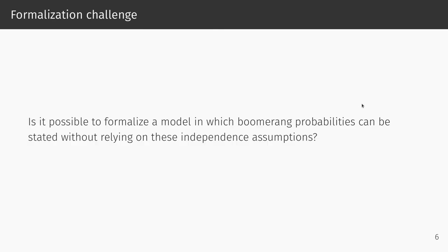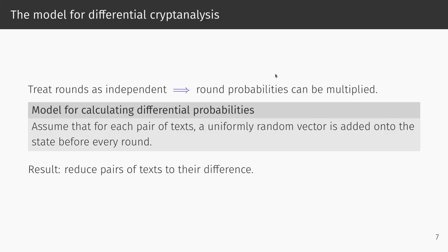This leads us to the main question in our research: can we formalize a model in which we can state boomerang probabilities without relying on these independence assumptions? As a starting point, we looked at the standard model used to calculate differential probabilities. To calculate probabilities of differential characteristics or trails efficiently, we want to treat rounds as independent, thereby allowing us to determine the trail probability as the product of the round transition probabilities. To model this, we assume that for each pair of texts, a uniformly random vector is added onto the state before every round. A result of this is that we no longer need to deal with pairs of texts, but only with a difference.